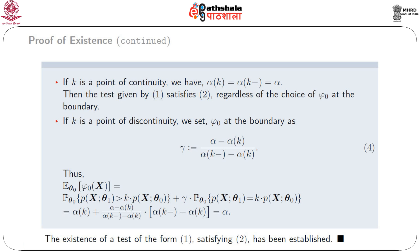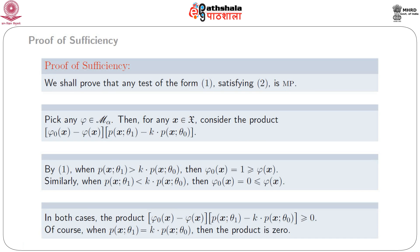Next, we come to the proof of the sufficient part. For the sufficient part, we shall prove that any test of the form 1 satisfying condition 2 is most powerful. We pick any phi belonging to script M_alpha. Then for any x belonging to script X — the sample space — we consider the product: (phi naught(x) - phi(x)) · (p(x; theta1) - k · p(x; theta naught)).